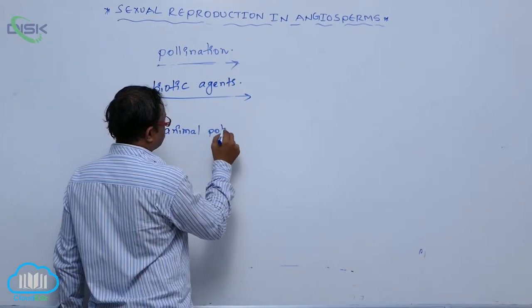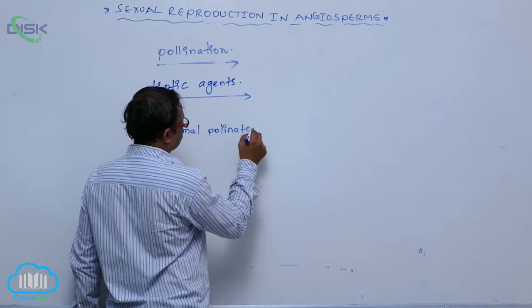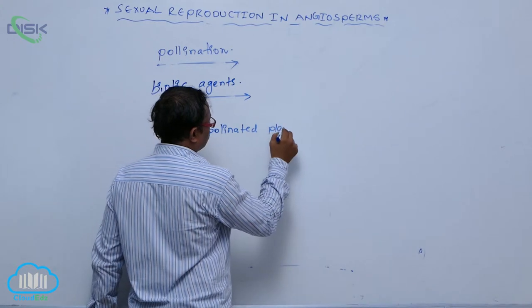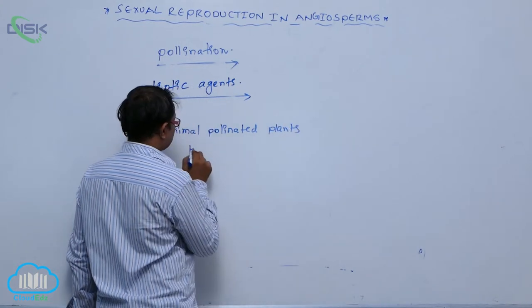Animal pollinated plants produce flowers.